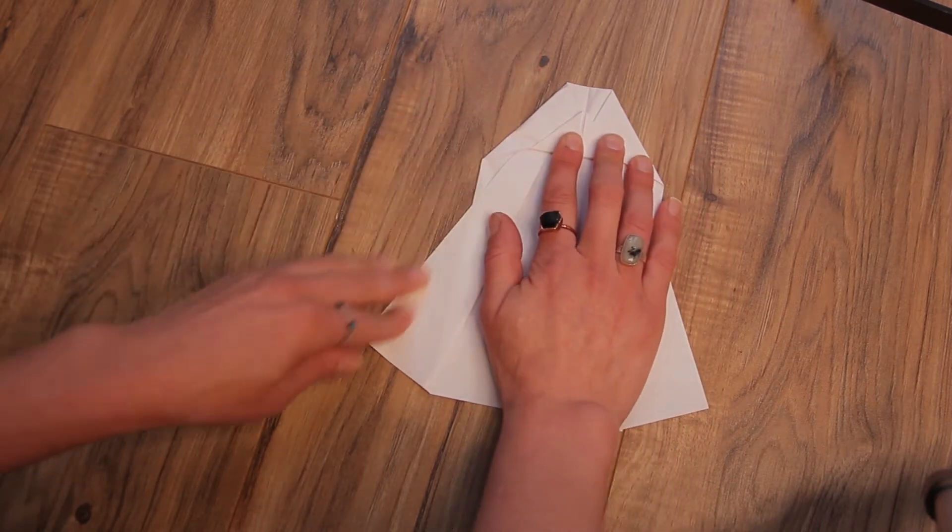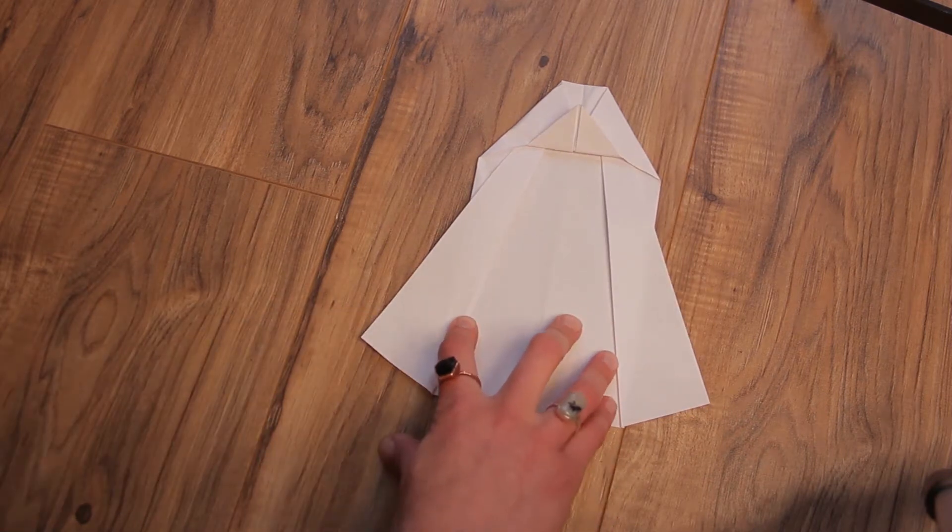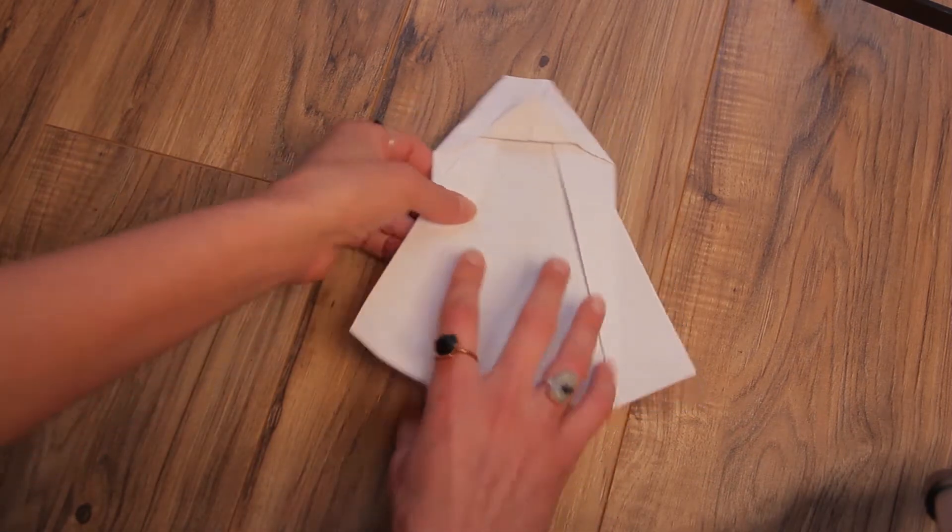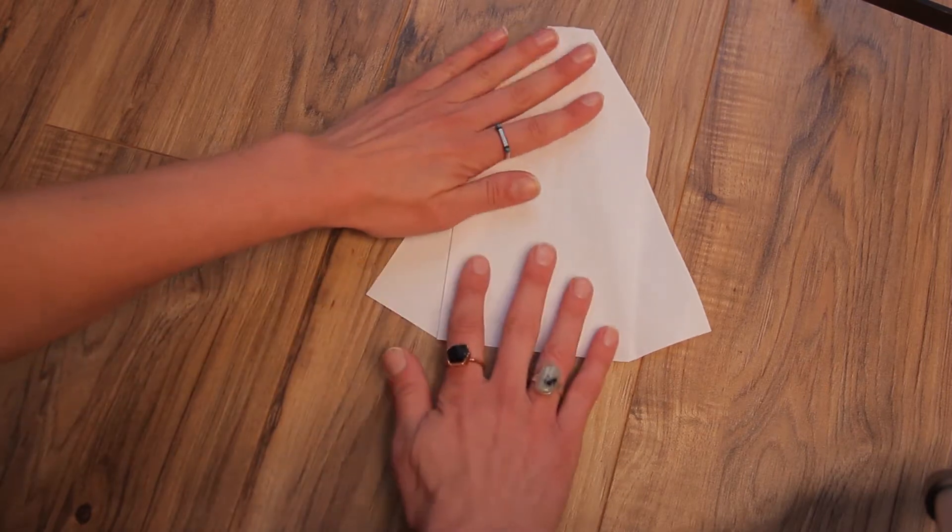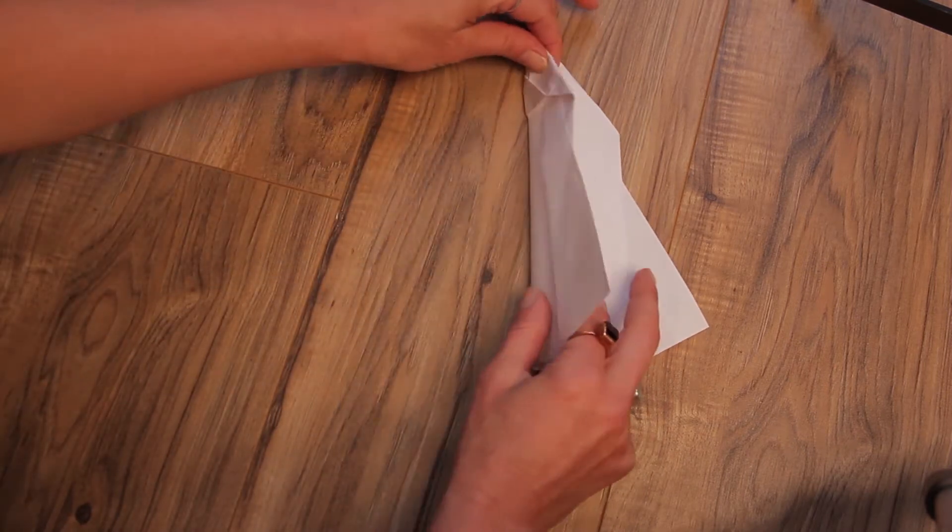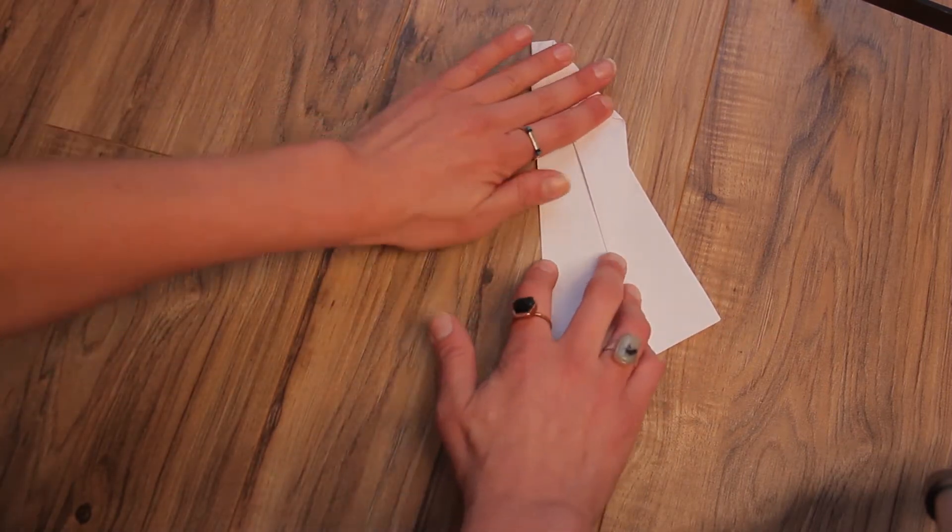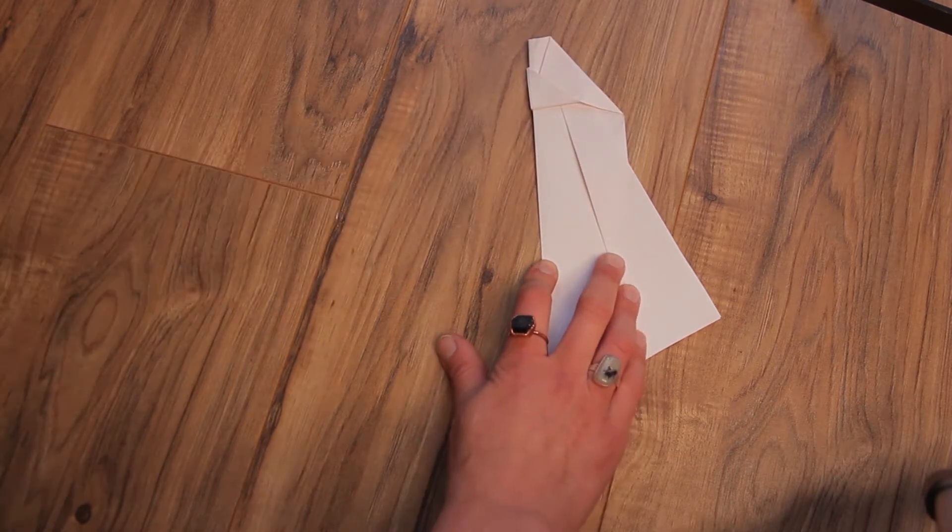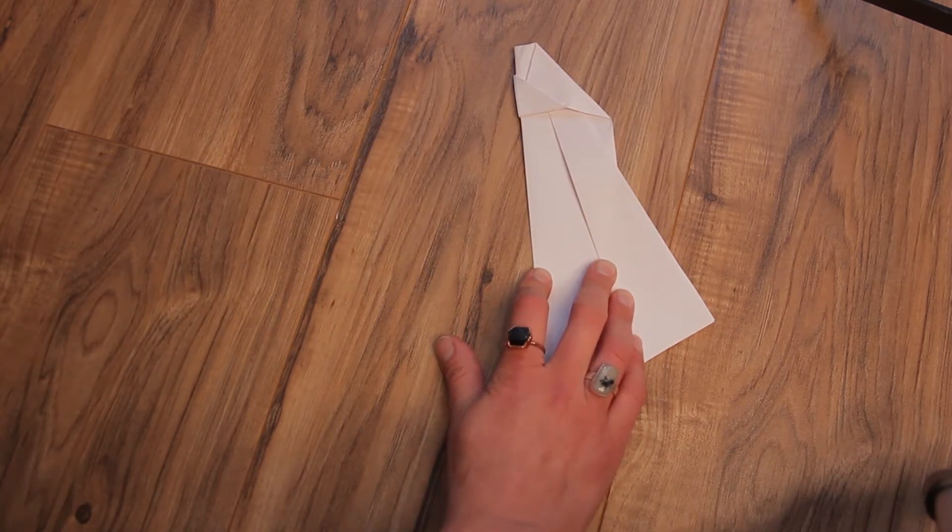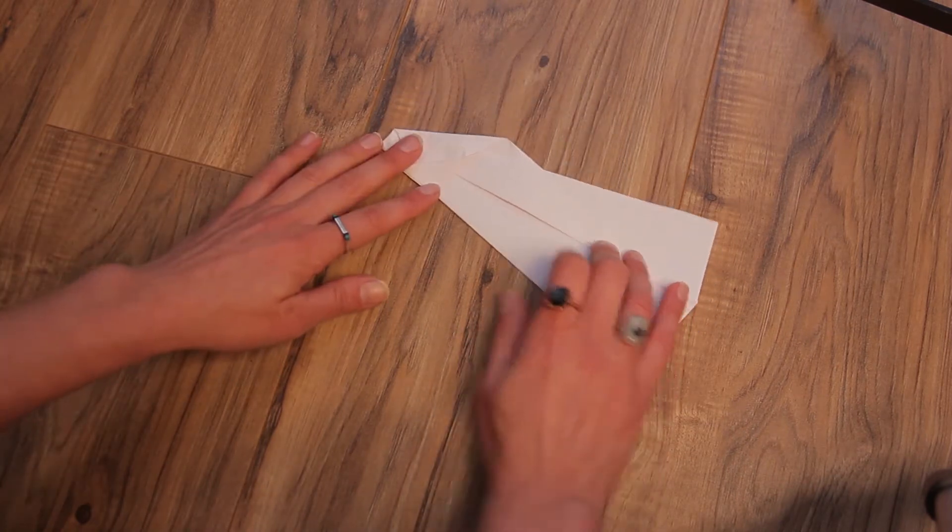Okay, this is what your plane should look like now. So step 11: we're going to flip our paper over. It should look like this on the back, and we're going to fold it in half backwards again. We should already have a crease for that. And then we are going to fold the wings out along the line that gets a little bit wider all the way across.